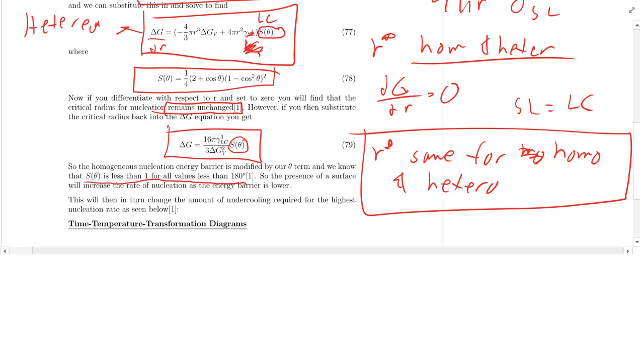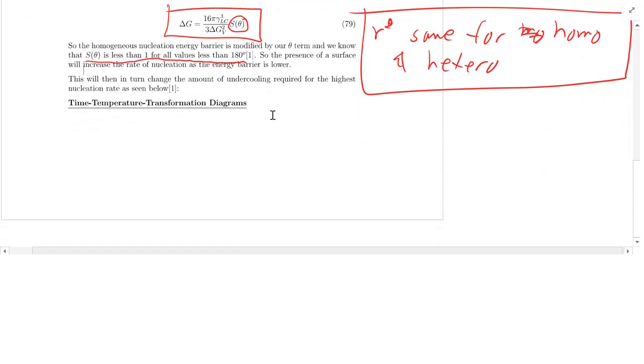So if your theta, that angle that we saw on the cap previously, if that is less than 180 degrees, which is simply will always be, we are going to lower that energy barrier. Again, just like we talked about previously, and it's kind of the same idea. As we, if you decrease the amount of area that you have to create, you're decreasing kind of the activation energy, the barrier to nucleate the particles.